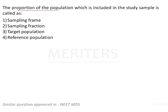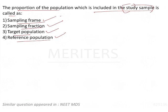The proportion of a population which is included in the study sample is called a sampling fraction. If you look at these terminologies — sampling frame, sampling fraction, target population, and reference population — each one is different.